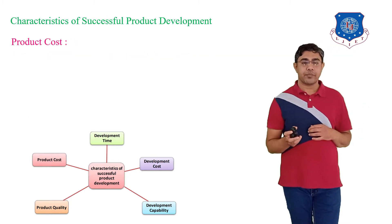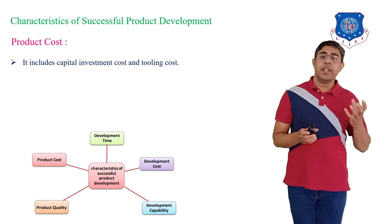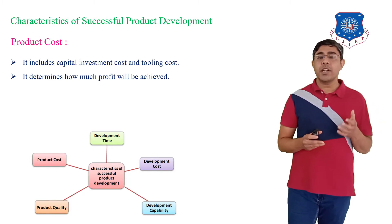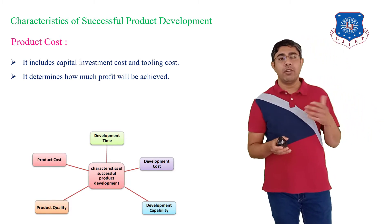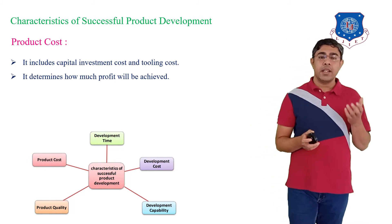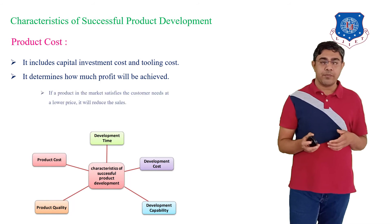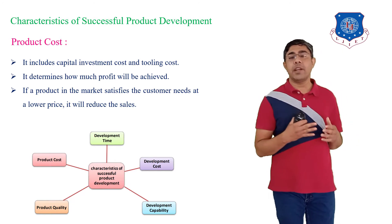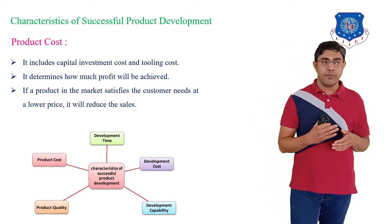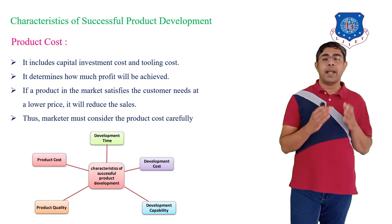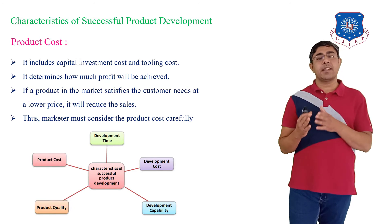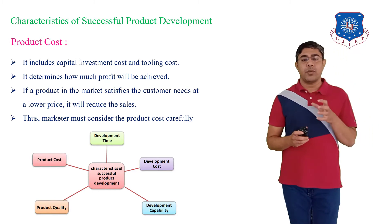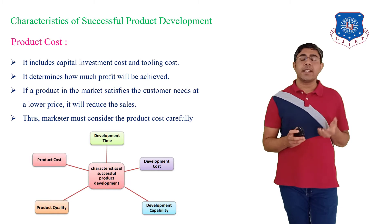Next is product cost. It includes the capital investment cost and tooling cost. It determines how much profit will be achieved — if your product development cost is less, you can achieve a good profit. If the product in the market satisfies the customer needs at a lower price, you must carefully consider the market. The market must consider the product cost carefully, and to decide the product cost you also have to consider the market.